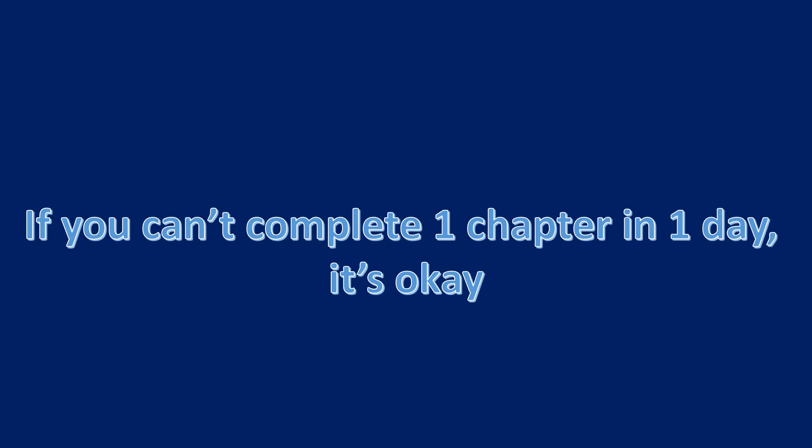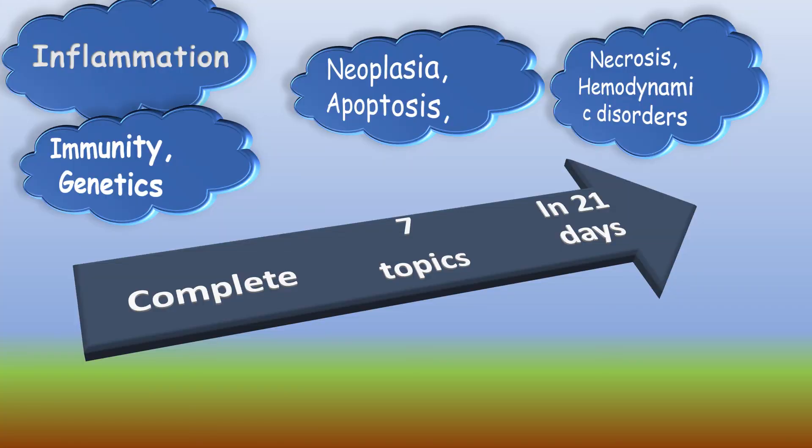Step 4: If you feel you cannot complete one chapter in one reading in a day, it's okay. You can take a maximum of three days to complete the chapter. Step 5: Try to complete the first reading of the following topics — inflammation, immunity, genetics, neoplasia, apoptosis, necrosis, and hemodynamic disorders — in 21 days.